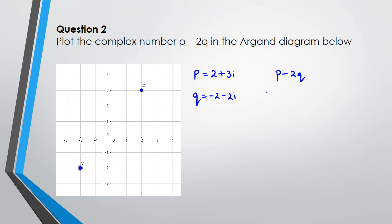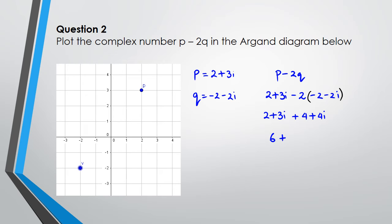So we calculate p minus 2q: that's (2 plus 3i) minus 2 times (negative 2 minus 2i). It's really important to put brackets around q, because most people multiply negative 2 by negative 2 as positive 4 but forget about the negative 2i part. With brackets: 2 plus 3i plus 4 plus 4i, which simplifies to 6 plus 7i.